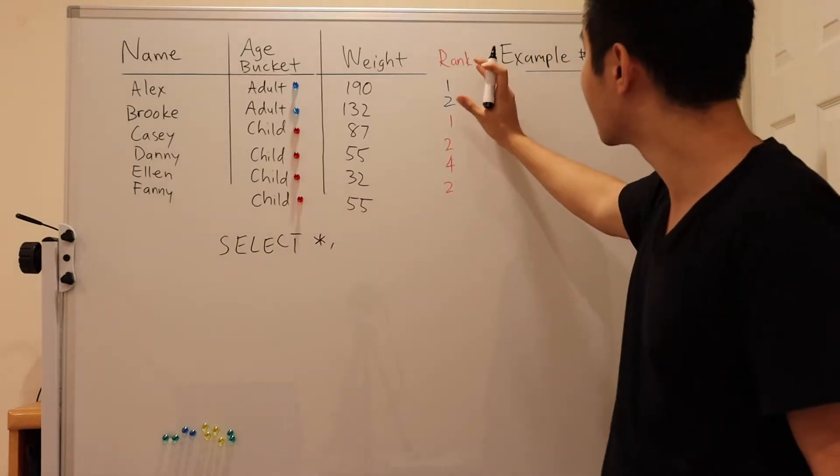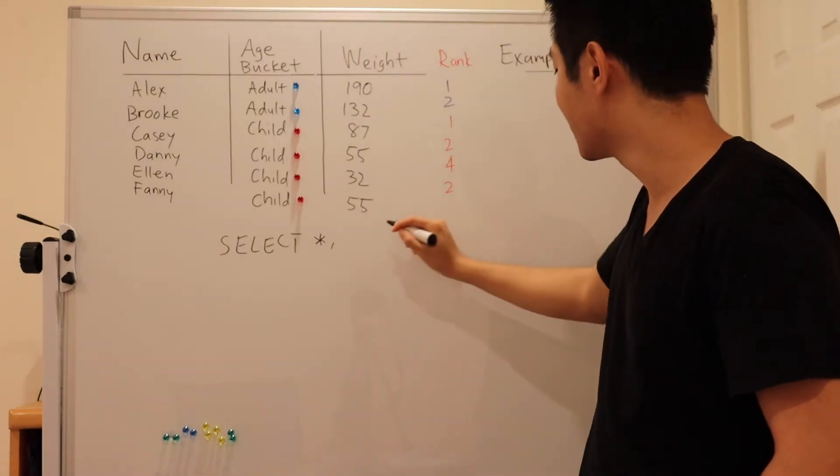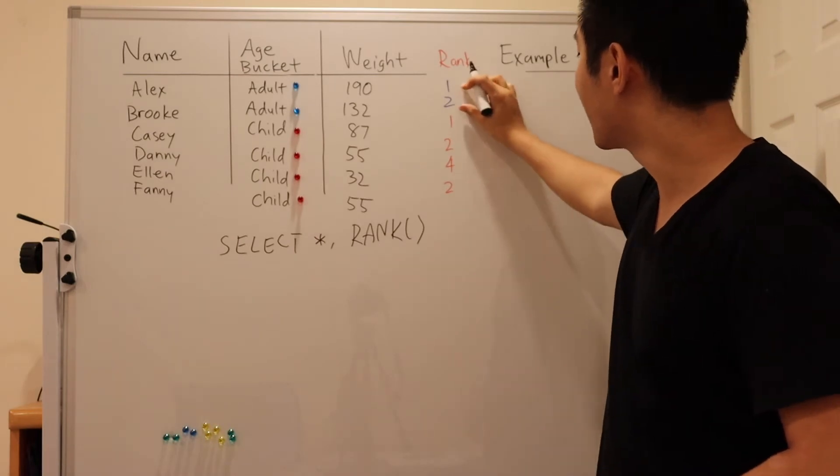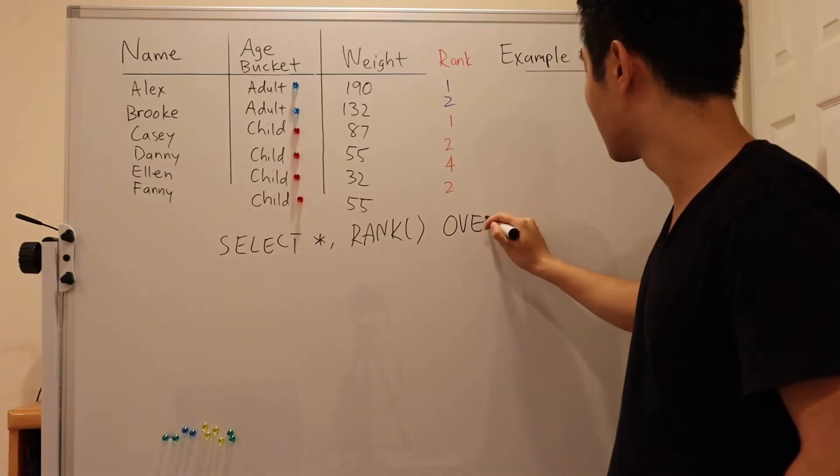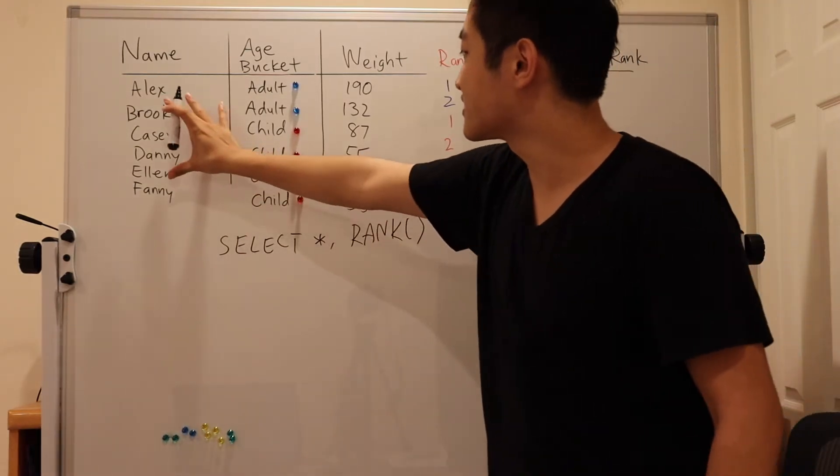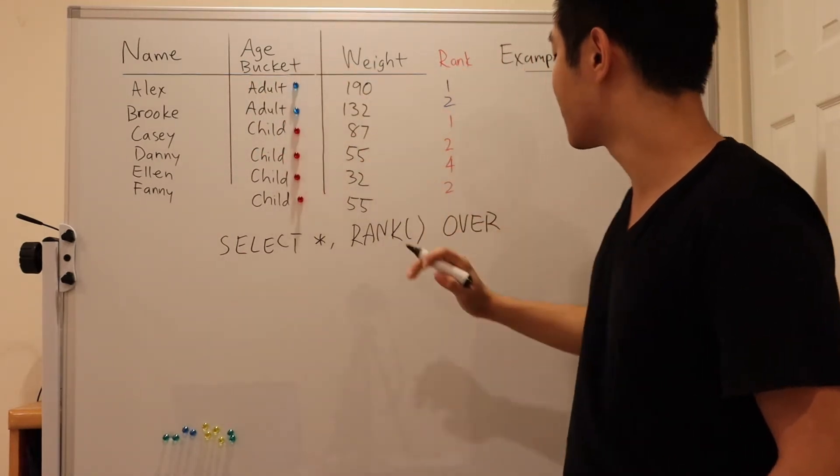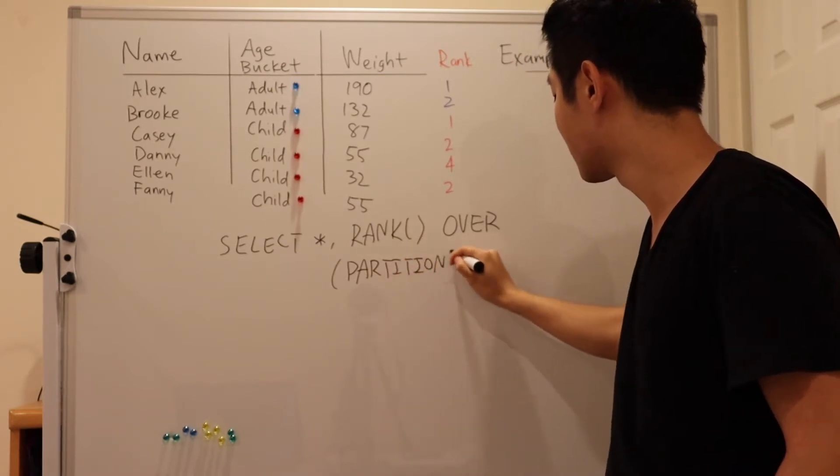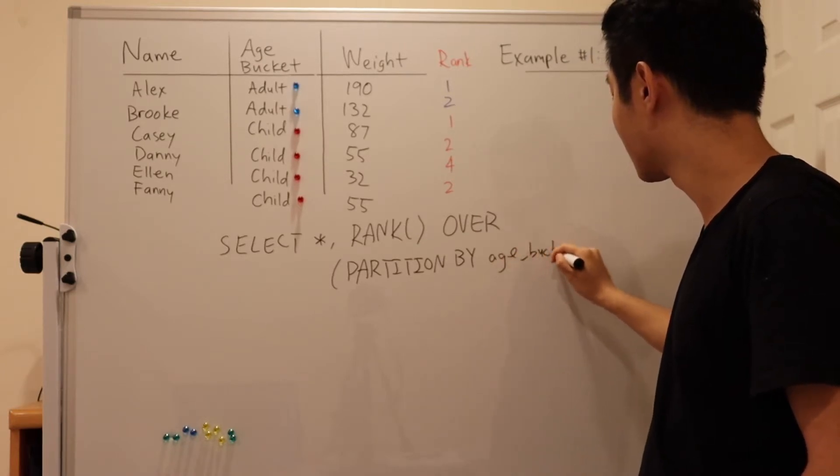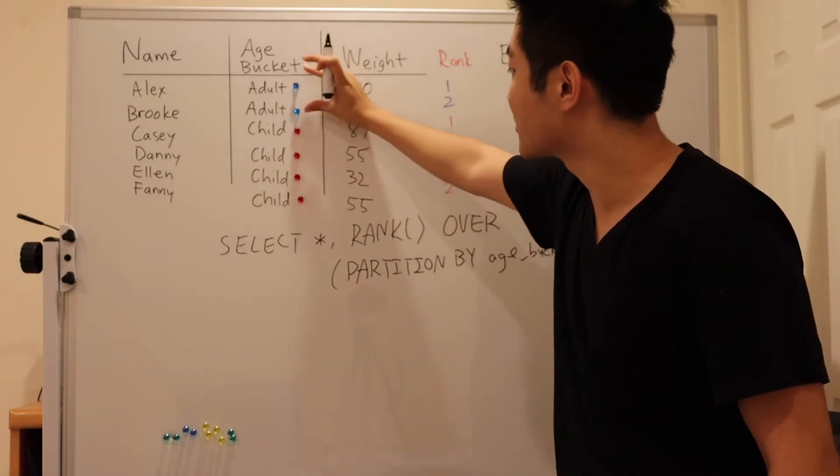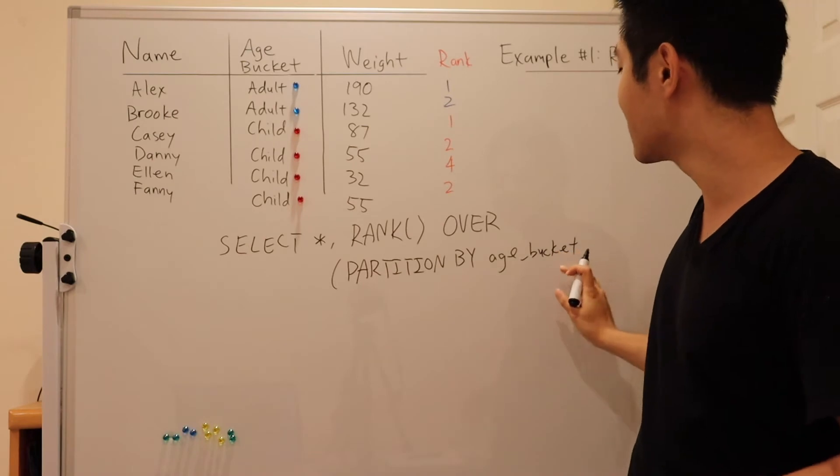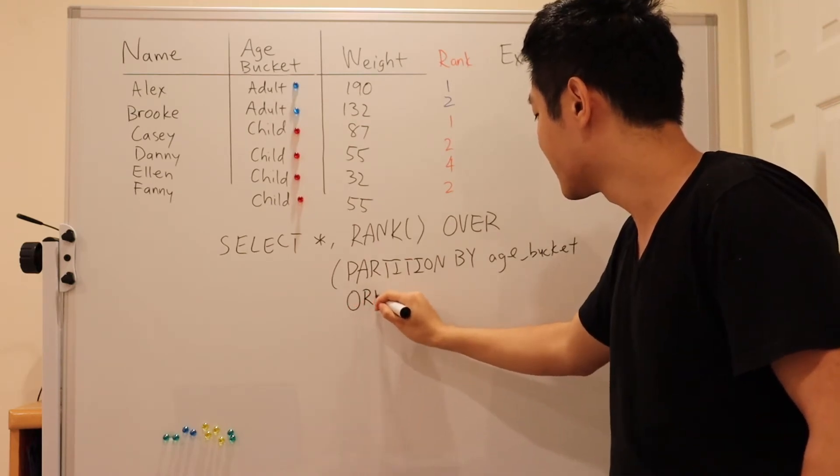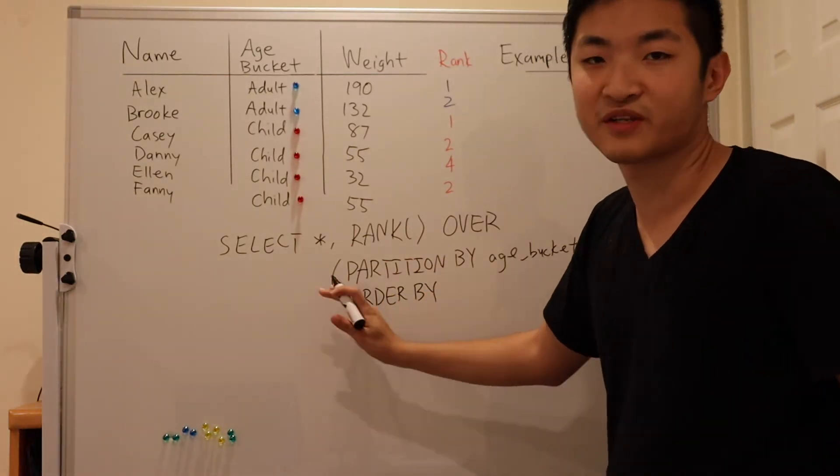But now we want to also include a column for this rank. This is where the analytic function comes in. We use the rank function. But what are we ranking over? So we want two distinct groups here, right? So we're going to partition this existing table into groups based on age bucket. So this is partitioned by age bucket. So now we're able to distinguish between rows for adult and rows for child. Then the next thing we want to do after that is we need to order the rows within the partition. So this is where order by comes in. And notice that this order by is separate from the overall queries order by.